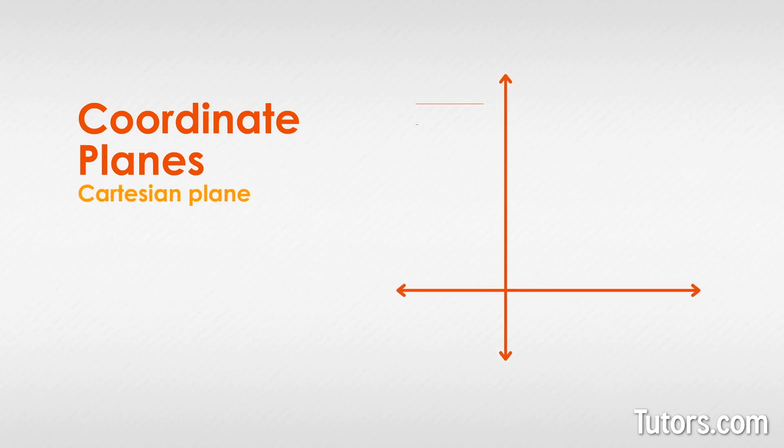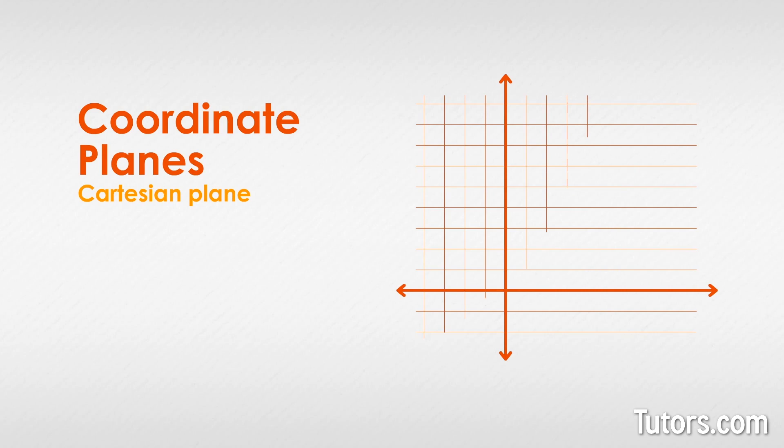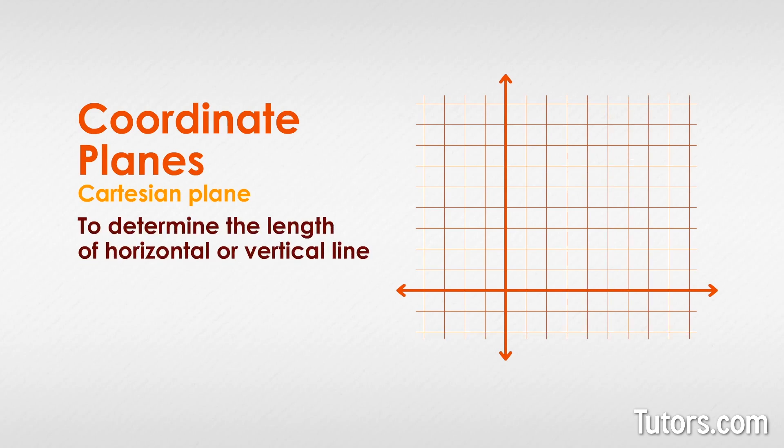Next, let's talk about coordinate planes. A coordinate plane, also called a Cartesian plane, is the grid built up from an x-axis and a y-axis. To determine the length of horizontal or vertical line segments on the plane, count the individual units from endpoint to endpoint.